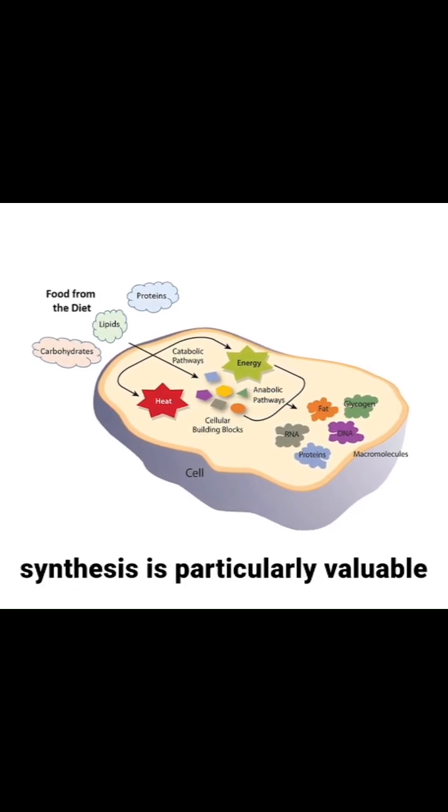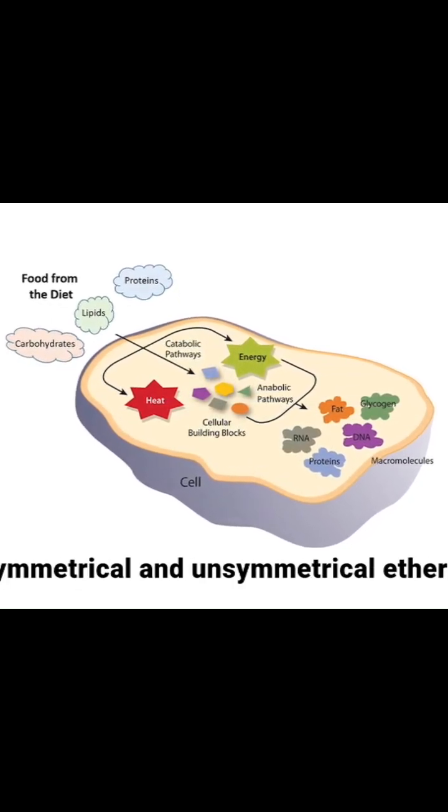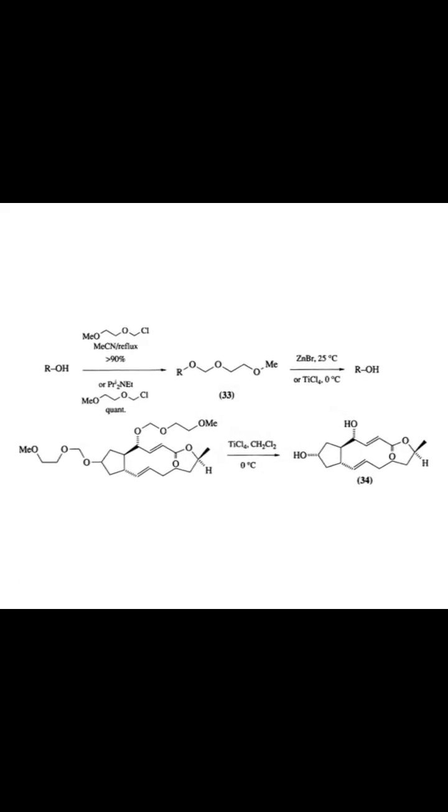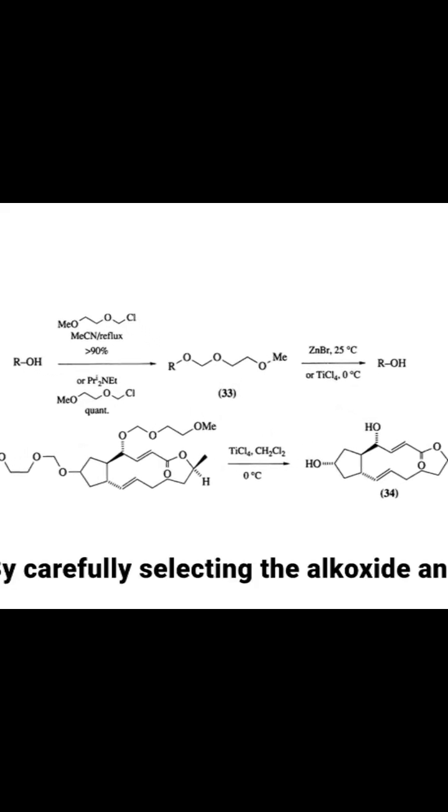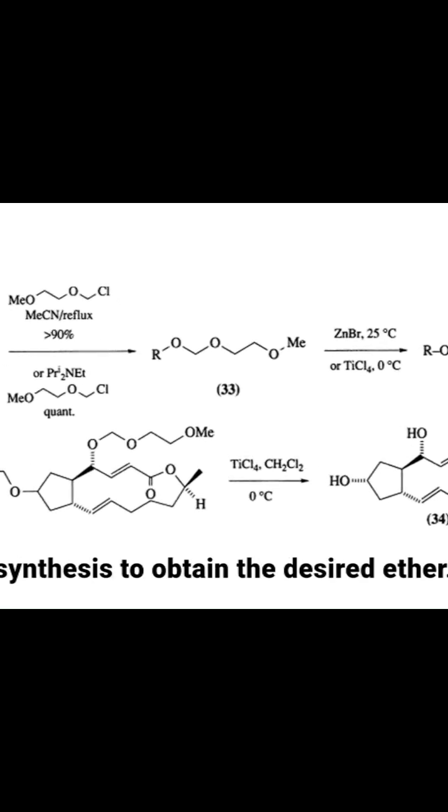The Williamson synthesis is particularly valuable because it allows the preparation of both symmetrical and unsymmetrical ethers, depending on the choice of reactants. By carefully selecting the alkoxide and alkylhalide, chemists can tailor the synthesis to obtain the desired ether.